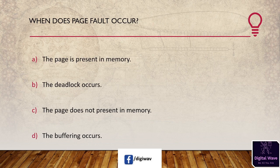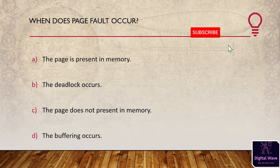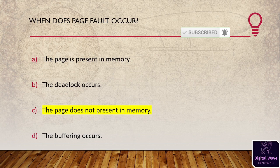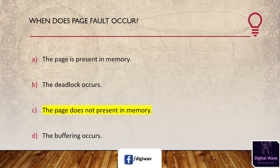Next question: when does a page fault occur? Options: the page is present in memory, deadlock occurs, the page does not present in memory, buffering occurs. The right answer is C — the page does not present in the memory. A page fault occurs when a process tries to access a block of memory and that page is not stored in RAM.